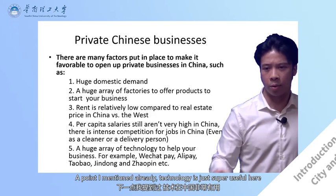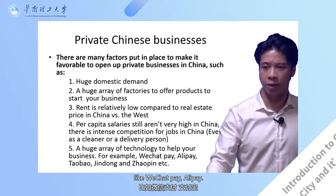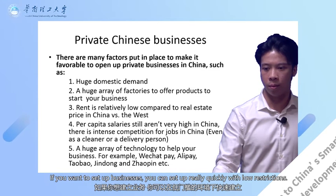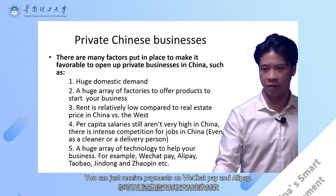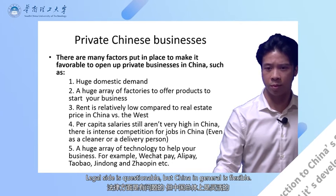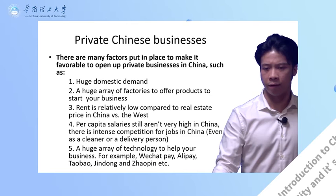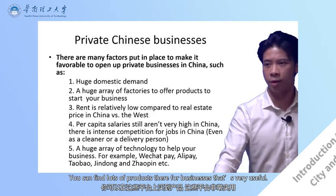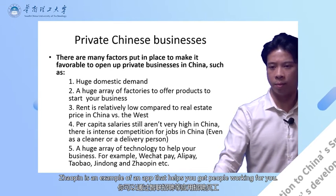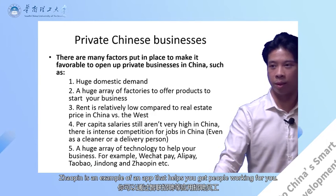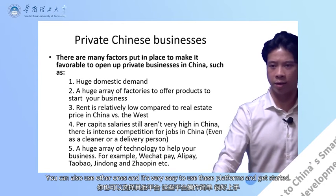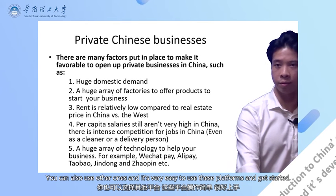Number five: the technology is just super useful here. WeChat Pay and Alipay — if you want to set up a business, you can set up really quickly with low restrictions. You can just receive payments on WeChat Pay and Alipay. Things like Taobao and JingDong allow you to buy lots of products for your business. Jaopin is an app that helps you get people working for you. You can also use Boss, which has lots of adverts. It's very easy to use these platforms and get started.